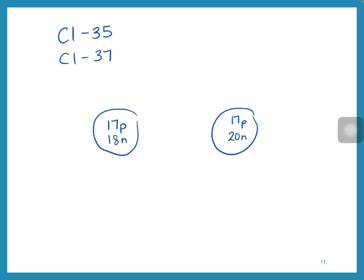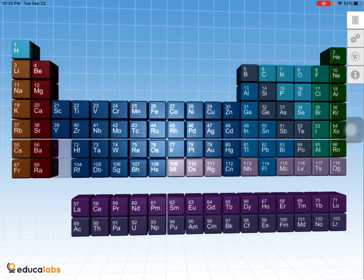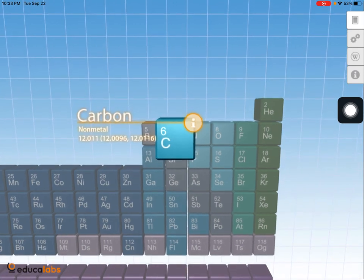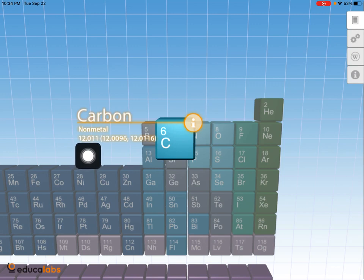Chlorine-35 has 17 protons and 18 neutrons, whereas chlorine-37 has 17 protons and 20 neutrons. The way we can figure out which isotope is most commonly found is from the atomic mass in the periodic table. If I look at carbon, the atomic mass is 12.011, which is closest to 12.